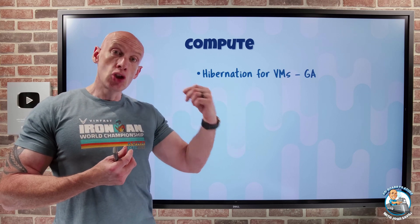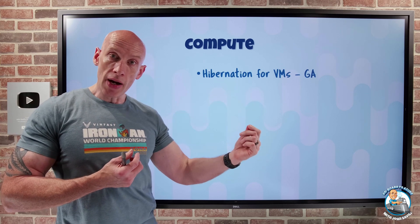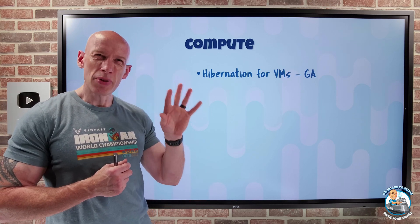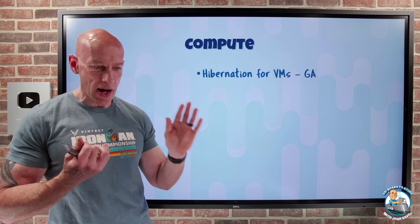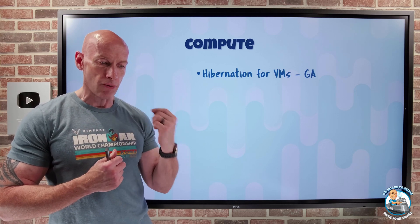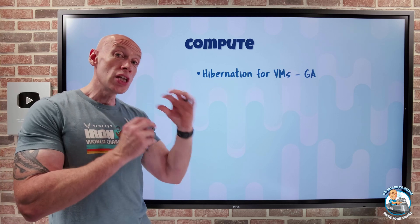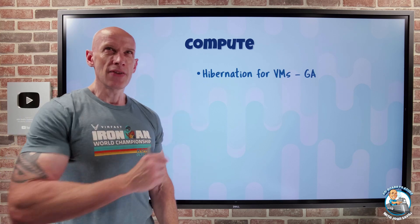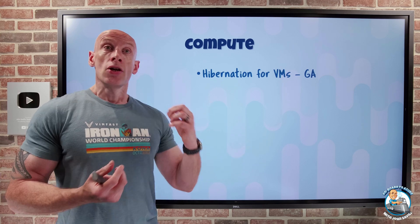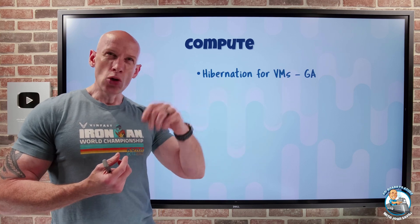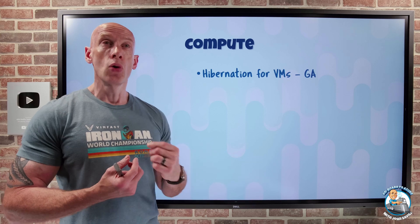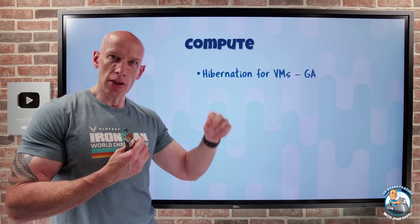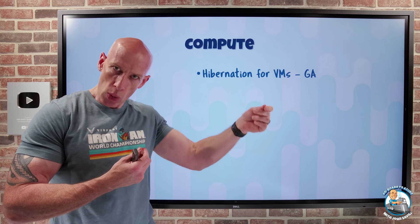I do obviously have to have durable storage — I can't use ephemeral OS drives for hibernate. It's available for general purpose virtual machines, the DV5s, the EV5s, up to 64 gigabytes of RAM. For the GPU SKUs, it's available in preview. This will be really nice for virtual desktops where I want to stop paying that compute but the user doesn't want to lose where they are. Also useful if I want to pre-warm up virtual machines so that if I have to scale out and start them, they're available much quicker.